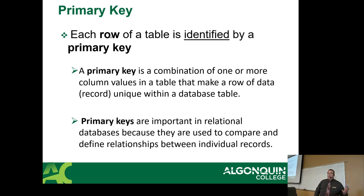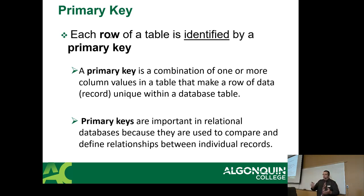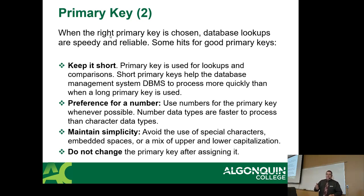Each row is identified by a primary key — a combination of one or more columns that makes it unique. Otherwise you can't identify a single record or connect multiple records, because there's nothing unique. Back to the Muhammad Muhammad example: if we were just going based on their names, we wouldn't even know what courses they're in because we have nothing to tie them to.